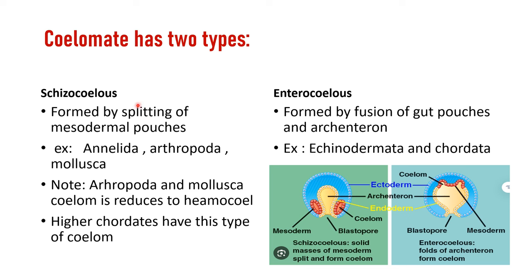In schizocoelous coelom, the cavity is formed from pouches of mesoderm — the mesoderm splits into pouches which form the coelom. Examples are Annelida and Arthropoda. In arthropods and mollusks, the coelom is reduced to a haemocoel. In enterocoelous coelom, the cavity is formed from gut pouches and archenteron fusion, and it is present in Echinodermata and Chordata.